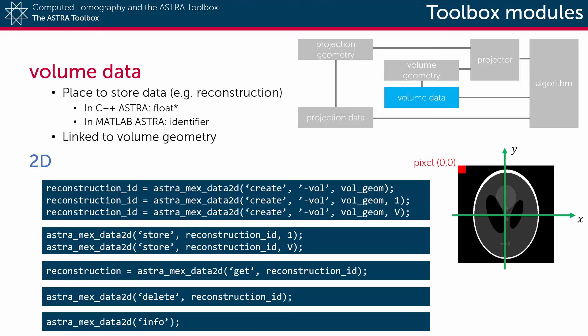The output of this function is then the unique data identifier that can be used in later calls. For example, you can alter the data from MATLAB after it has been created by using the store functionality and by specifying the data identifier and the scalar or matrix data.